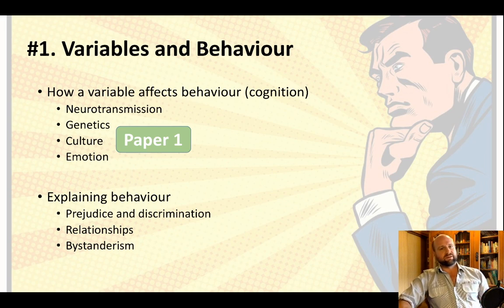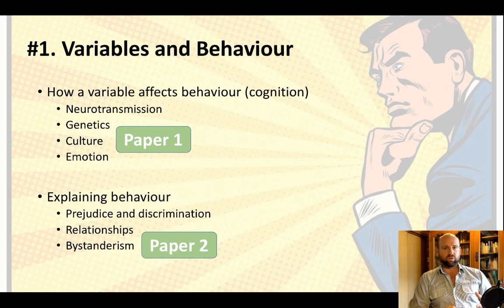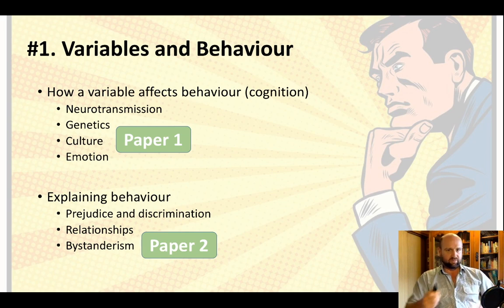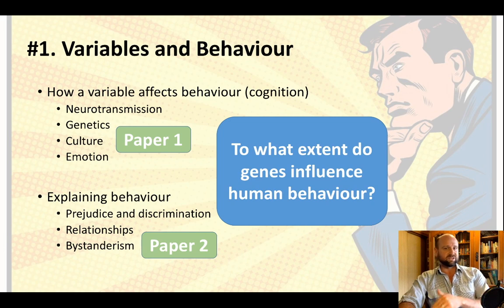Generally speaking, Paper 1 could identify the variable — like biological and sociocultural factors — while Paper 2 identifies the behavior. This is why combining Paper 1 and 2 in your course makes sense instead of preparing for them separately. For example, an exam question could be: to what extent do genes influence human behavior? You have to explain how genes influence behavior, where's the evidence, and then counter-argue — what are the counter-arguments?